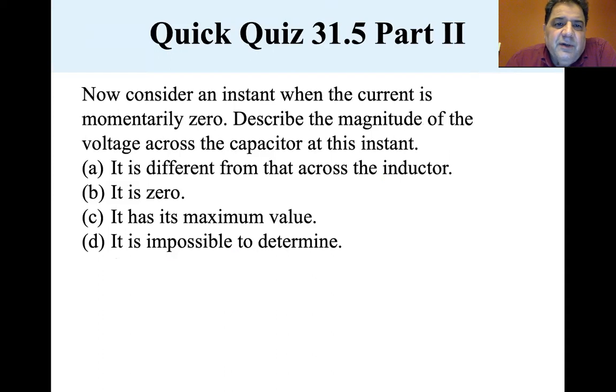Now let's look over here. Consider an instant when the current is momentarily zero. Describe the magnitude of the voltage across the capacitor at this instant. If the current is momentarily zero, that means the capacitor has fully charged. So it has its maximum value.